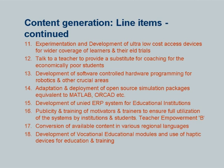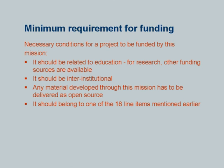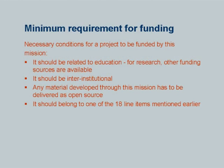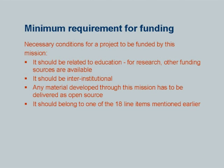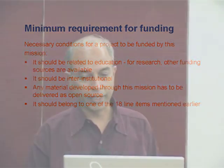Unified ERP system, motivating the trainers, conversion of available content in various regional languages, and vocational educational modules. Some people here already have projects on some of them and are also our partner institutes. The minimum requirement for funding is that it should be related to education — for research there are other agencies such as DST, CSIR and so on. It should be inter-institutional; it is not possible for one institute to get the money and do it themselves. The idea is to promote collaboration. Any material developed through this mission has to be delivered as open source, and it should belong to one of the 18 line items.